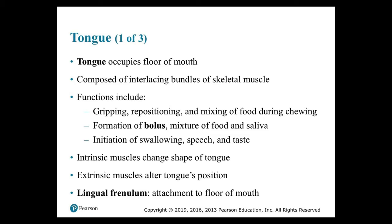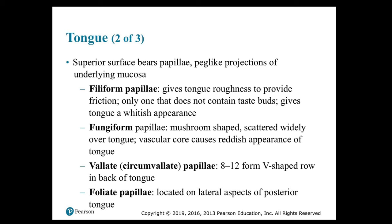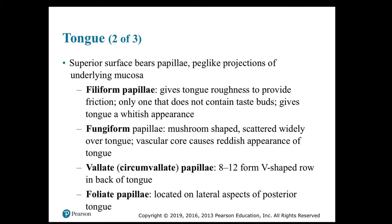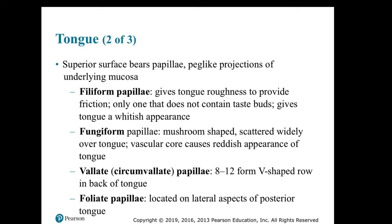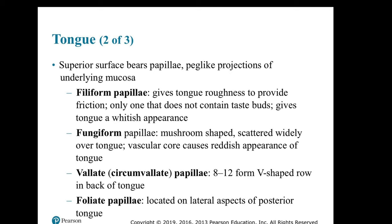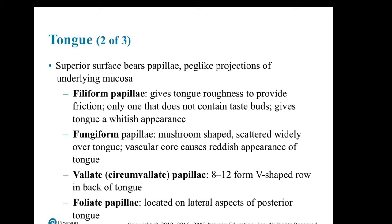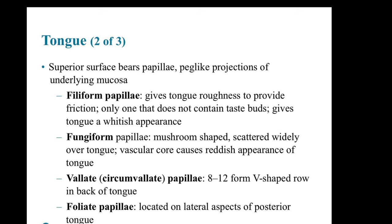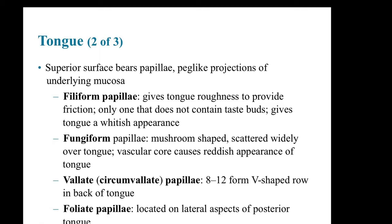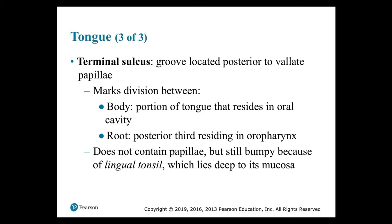The superior surface of the tongue bears papillae — peg-like projections of underlying mucosa — of four types. Filiform papillae give the tongue roughness to provide friction and are the only type without taste buds, giving the tongue a whitish appearance. Fungiform papillae are mushroom-shaped and scattered widely over the tongue; the vascular core causes the reddish appearance. The vallate or circumvallate papillae — 8 to 12 — form a V-shaped row at the back of the tongue. Foliate papillae are located on the lateral aspects of the posterior tongue. The terminal sulcus is a groove posterior to the vallate papillae, marking the division between the body and the root.